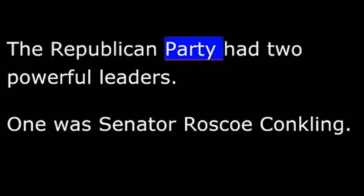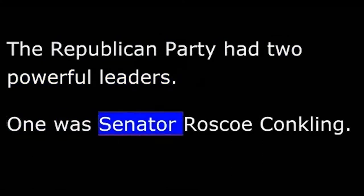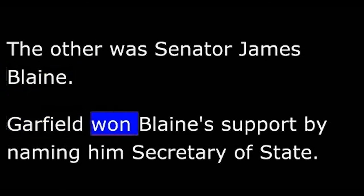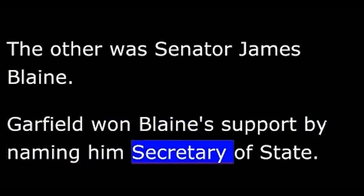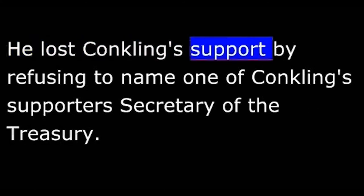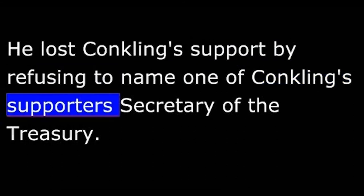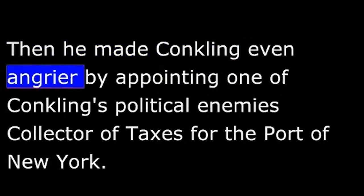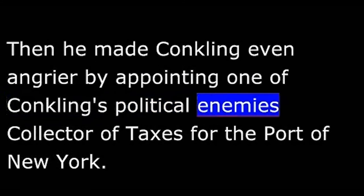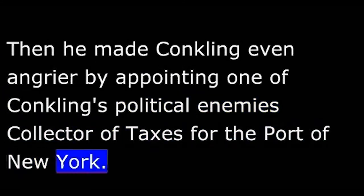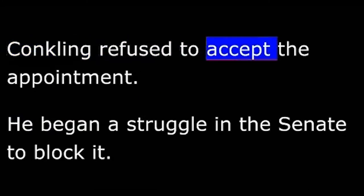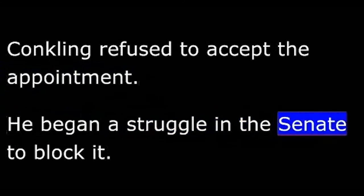The Republican Party had two powerful leaders: Senator Roscoe Conkling and Senator James Blaine. Garfield won Blaine's support by naming him Secretary of State. He lost Conkling's support by refusing to name one of Conkling's supporters Secretary of the Treasury. Garfield denied he had promised anything to Conkling. Then he made Conkling even angrier by appointing one of Conkling's political enemies as collector of taxes for the Port of New York — the most important federal job in Conkling's home state. Conkling refused to accept the appointment and began a struggle in the Senate to block it.